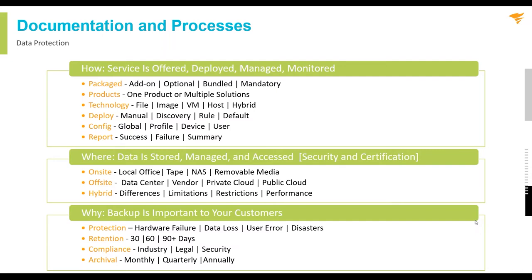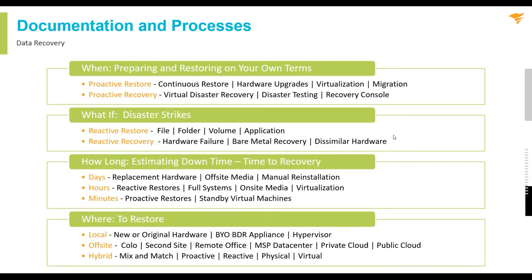All of this protection boils down to recovery. The data recovery checklist is about the when, the what-if, the how long, and the where. The 'when' is about determining if you're going to be proactive — selling them a solution with standby virtual machines, migrating them off old hardware onto new hardware, or virtualizing obsolete hardware into a hypervisor so they can continue to run without the potential of hardware failure. The 'what' is the fact that sometimes you've got to be reactive: what if this fails? Have you tested your documented recovery process? It's a great time to set up periodic testing plans and run employees through recovery drills so they know exactly what to expect when the call comes through.